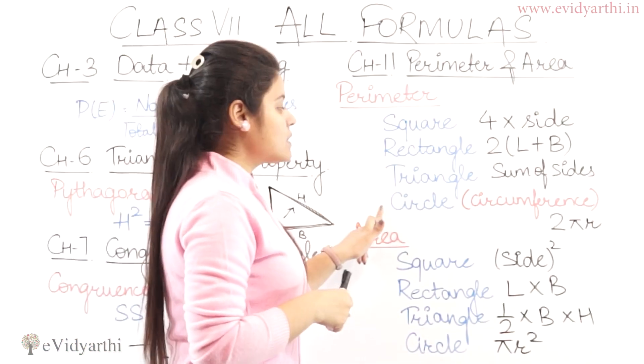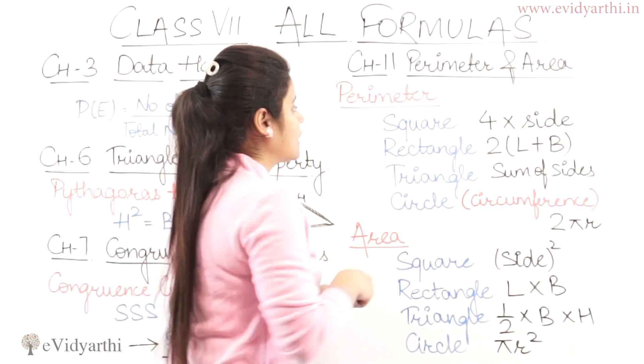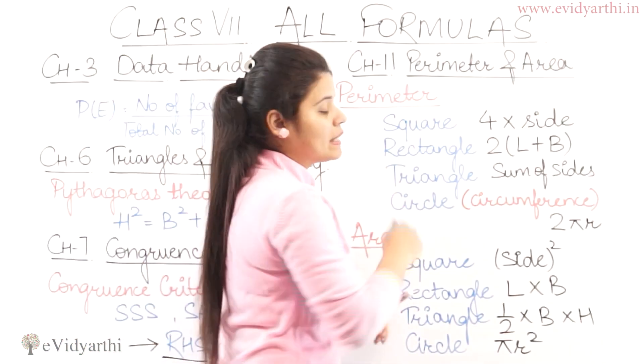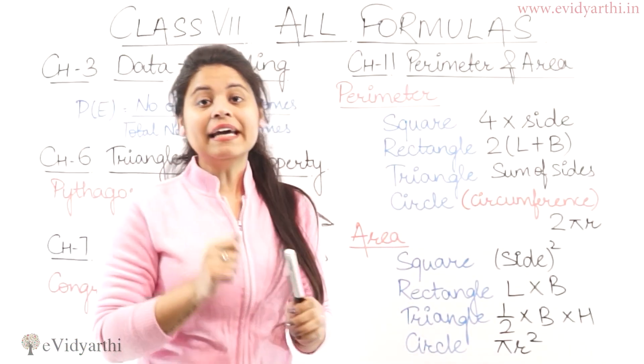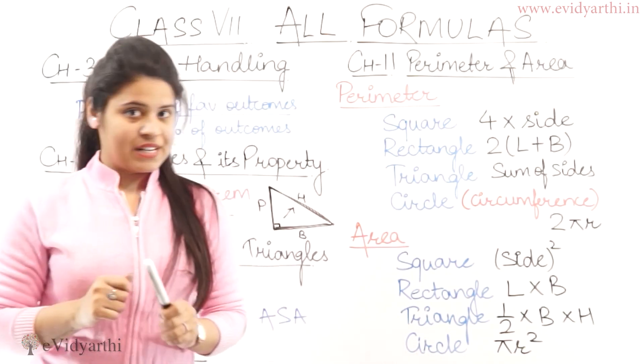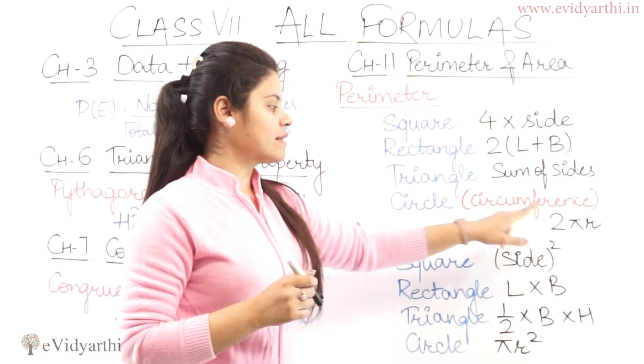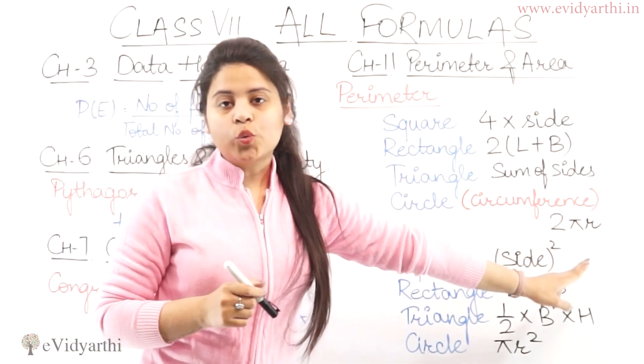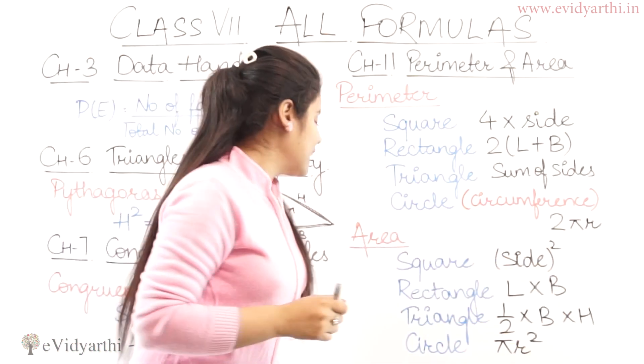Then we have circle. For a circle, we don't say perimeter — we say circumference of a circle. The circumference of a circle is 2πr.